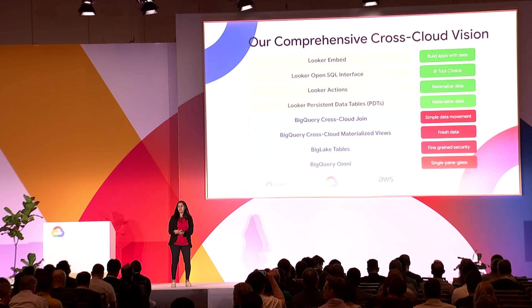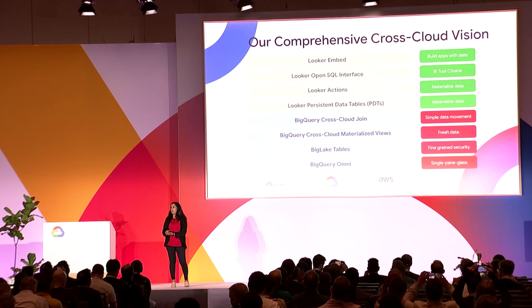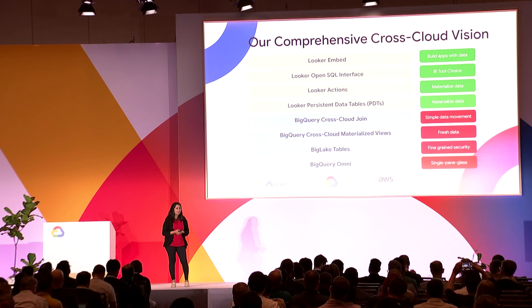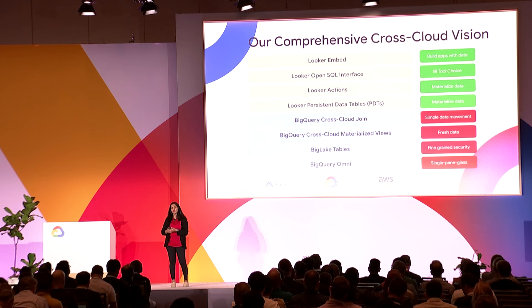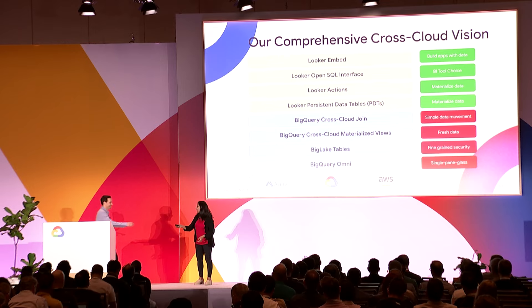To summarize, our goal at Google Cloud is to provide a comprehensive and robust platform for cross-cloud analytics. BigQuery Omni consolidates your data silos and provides a single pane of glass. We talked about fine-grained access control, consistent governance, and capabilities like cross-cloud materialized views and joins to combine your data and do a lot more with it. To talk about the second part of this cross-cloud data platform, I want to invite Adam back to the stage to talk about the Looker capabilities.